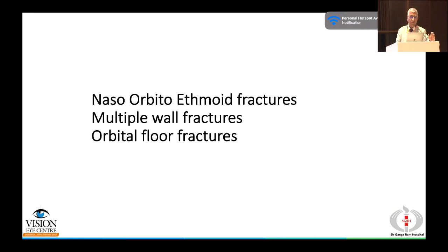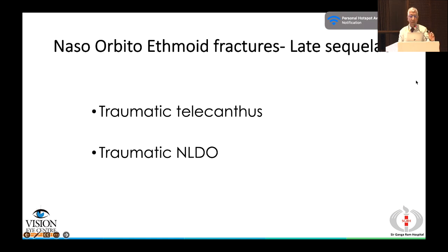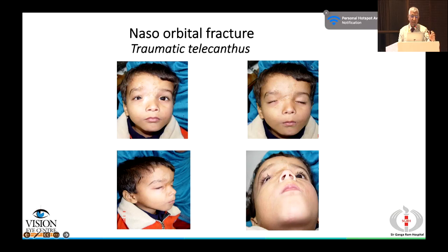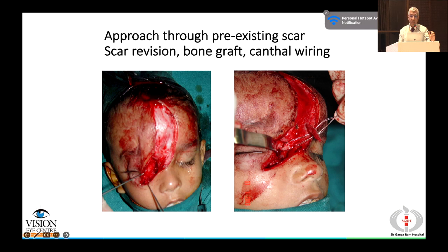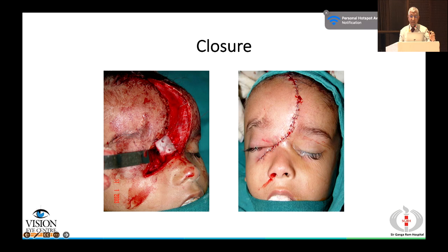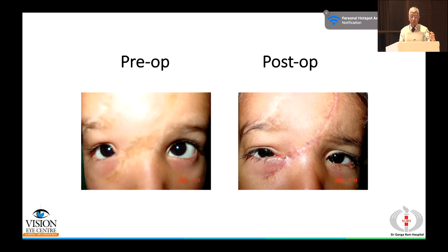The common trauma an oculoplastic surgeon handles includes naso-orbito-ethmoid fractures, fractures as part of polytrauma, and orbital floor fractures. Major complications of naso-orbito-ethmoid fractures include traumatic telecanthus associated with nasolacrimal duct obstruction. Traumatic telecanthus is difficult to handle when old, requiring scar revision, bone grafting, transnasal wiring, or wide medial canthus fixation to correct it, with significant improvement in aesthetic appearance achievable.